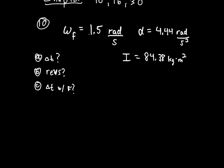The first thing we have to do is find the change in time — how long does it take to spin this thing up to the final velocity. The initial angular velocity of the merry-go-round is zero, since it starts stopped.